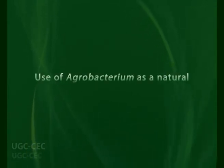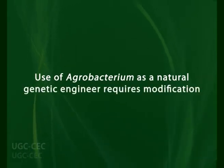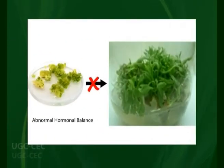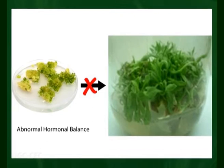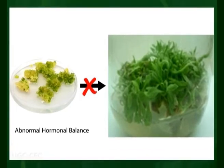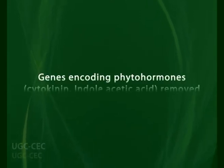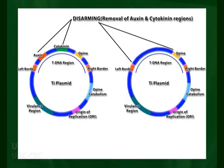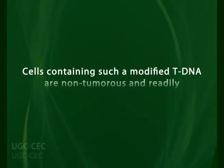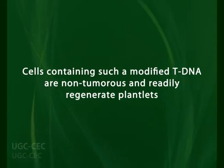The use of Agrobacterium as a natural genetic engineer requires certain modifications. It was found that tissues infected with Agrobacterium could not be coaxed to regenerate new plants due to the abnormal hormonal balance. So an Agrobacterium strain was used in which the genes encoding the phytohormones cytokinin and indoleacetic acid have been removed. Once removed, the plant tissues infected with the modified Agrobacterium could produce regenerated plants. This process of removal of hormone-encoding genes is called disarming. Cells containing such a modified T-DNA are non-tumorous and readily regenerate plantlets.